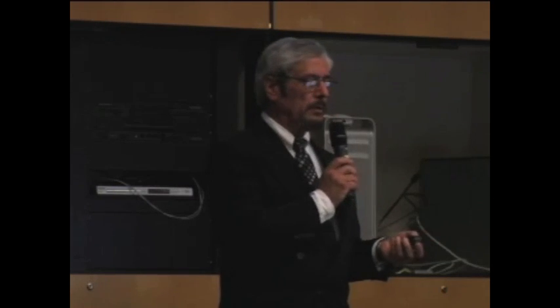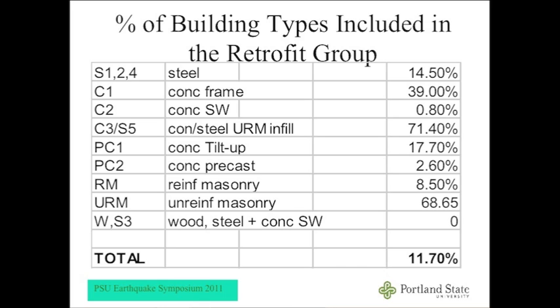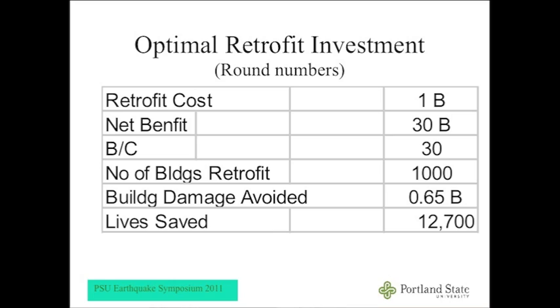Out of the 7,700 buildings, 591 URMs — unreinforced masonry — need to be retrofitted because they're going to kill people. Almost 69% of URM buildings are incorporated into this retrofit recommendation. Retrofit cost is about a billion dollars, net benefit is $30 billion, benefit-to-cost ratio is about 30, and the number of buildings to be retrofitted is about 1,000. Building damage avoided is about 0.65, because we assigned $2.2 million per life saved — a number traditionally used. Lives saved: 12,700.